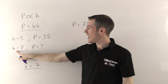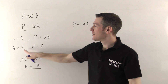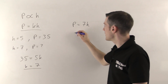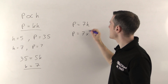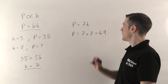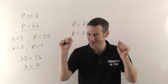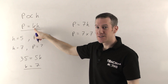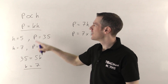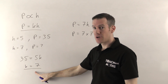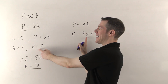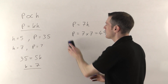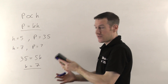Now you can answer the question they've actually given you. They want to know the pay when you work seven hours. Because you know the constant, you just replace h by 7: P equals 7 times 7, so you'd get paid £49. That's how you do it — replace the proportional sign with equals K times the other thing, use the given numbers to find K, then answer the question. Now let me give you an example with inverse proportion.